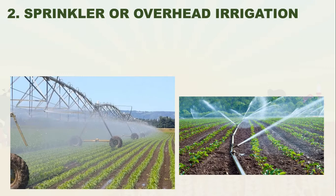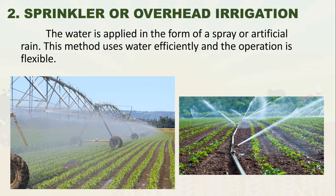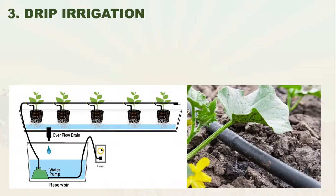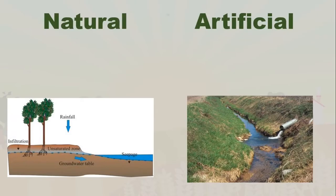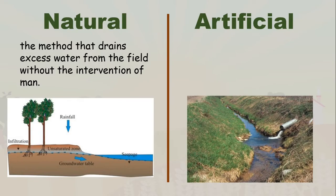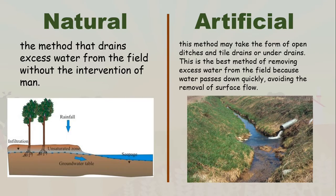Sprinkler or overhead irrigation applies water in the form of a spray or artificial rain; this method uses water efficiently and is flexible. Drip irrigation applies water through pipes at calibrated pressures. Drainage removes excess water from the field, as excess water may damage crops and cause runoff and leaching of soil nutrients. Drainage methods can be natural — draining without human intervention — or artificial, taking the form of open ditches and tile drains or underdrains, which allows water to pass down quickly, avoiding surface runoff.